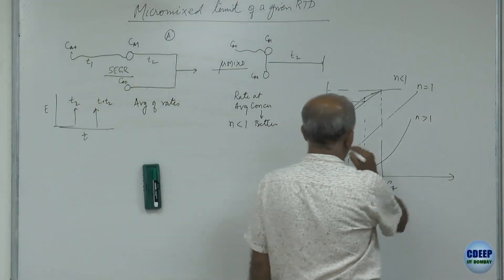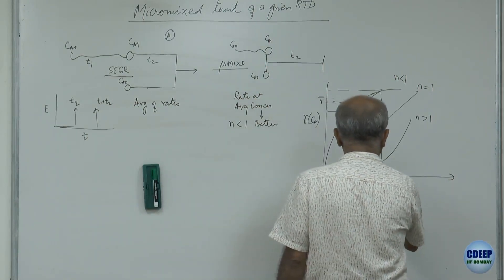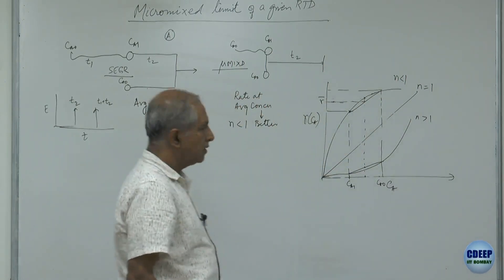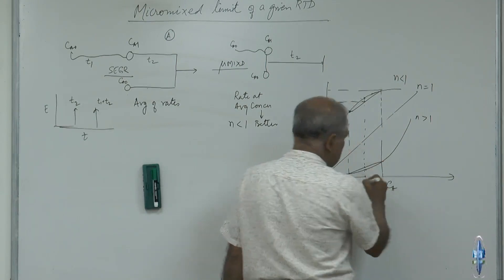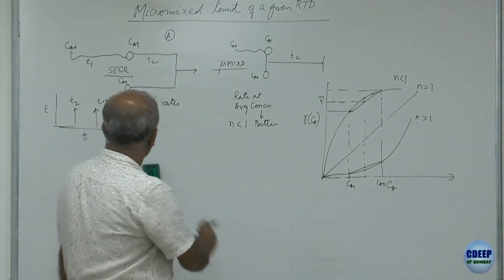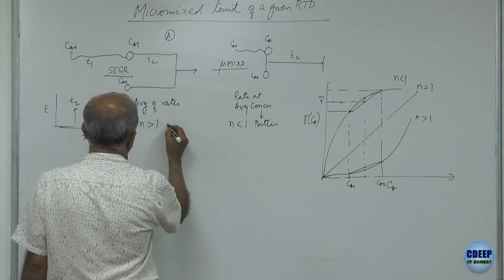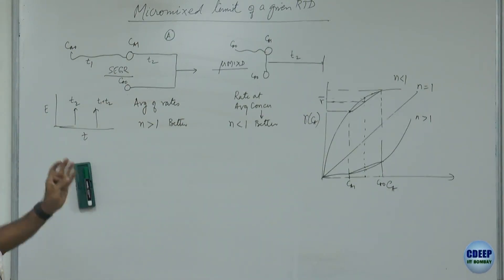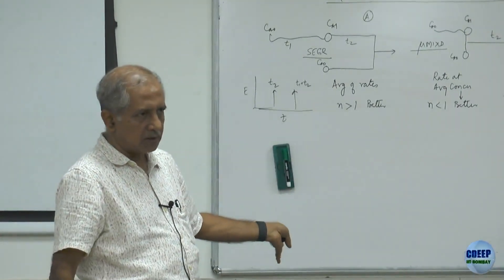For n greater than 1, if we join the two points on the rate curve, rate at the average concentration is worse than the average of the rates. So the average of the rates — the segregated case — is better for n greater than 1.